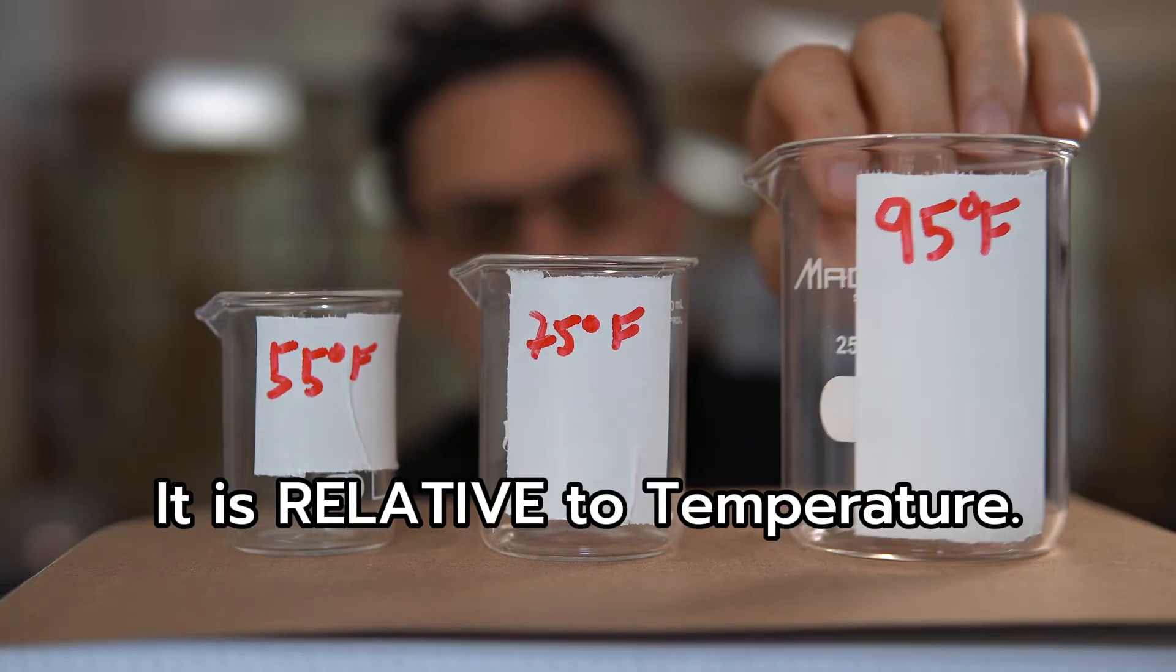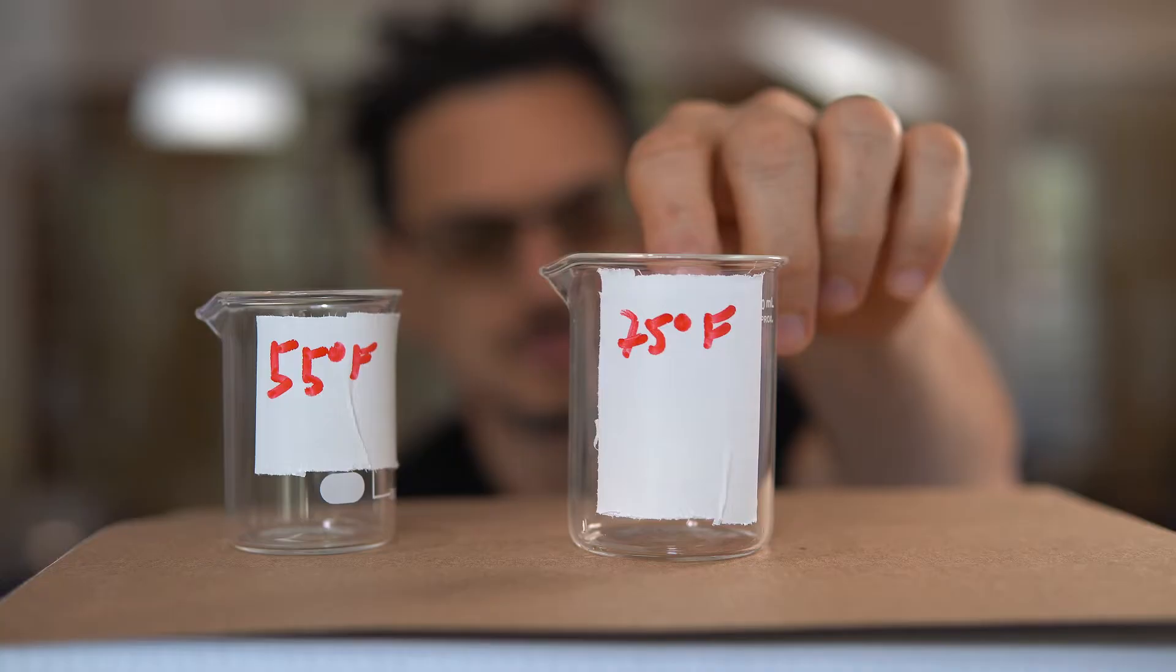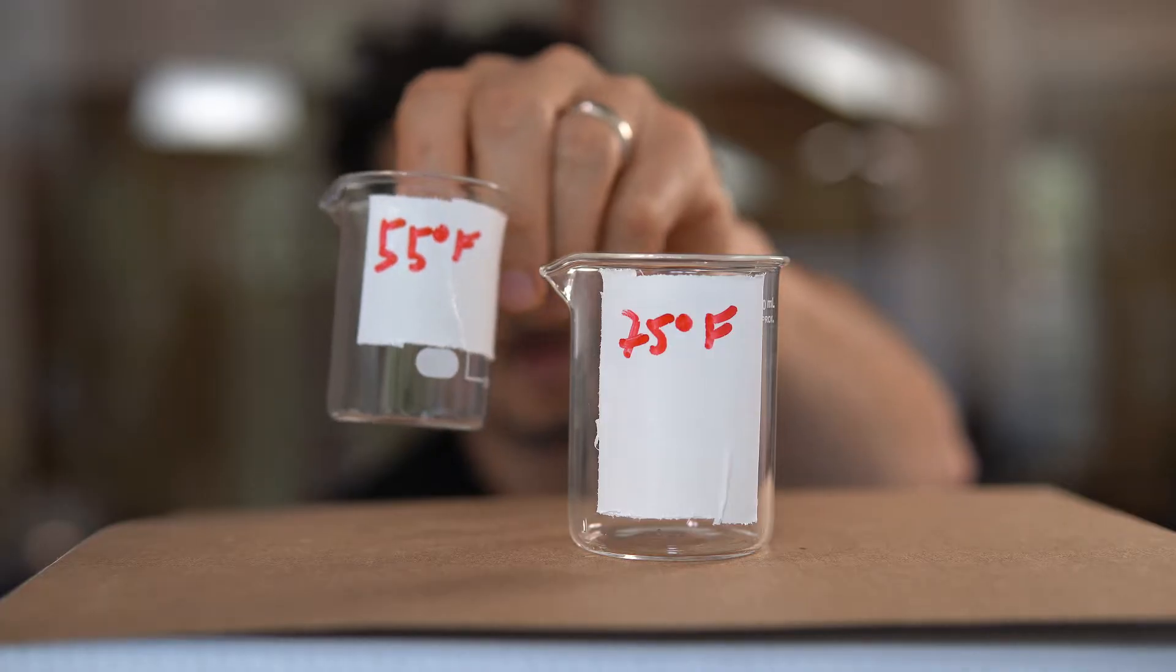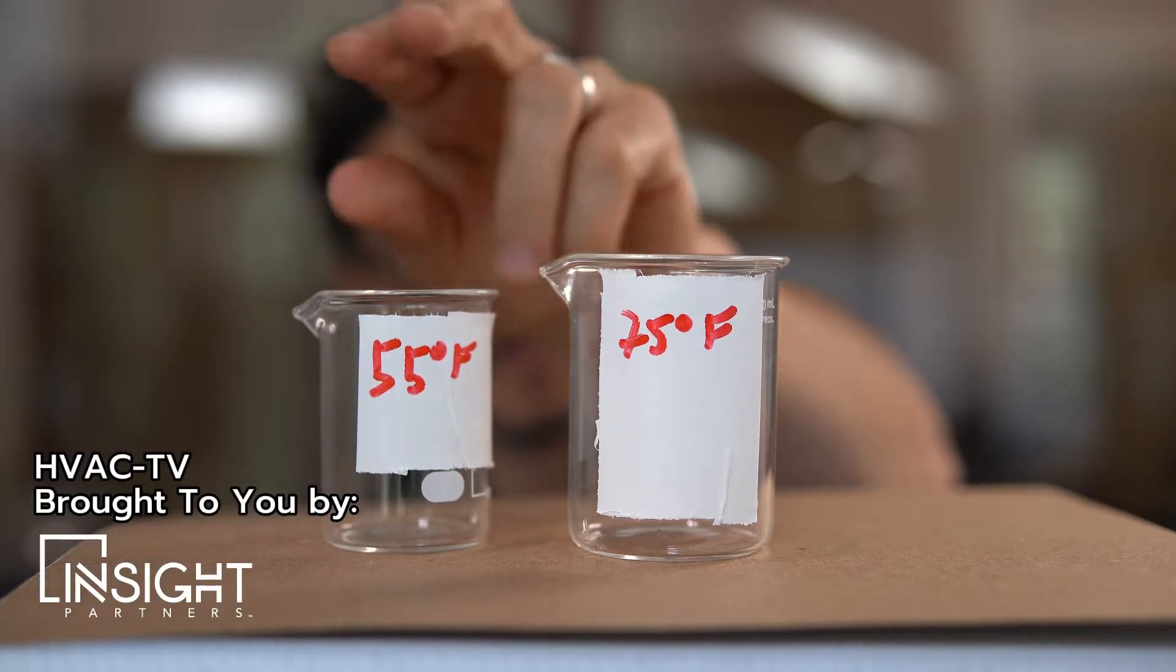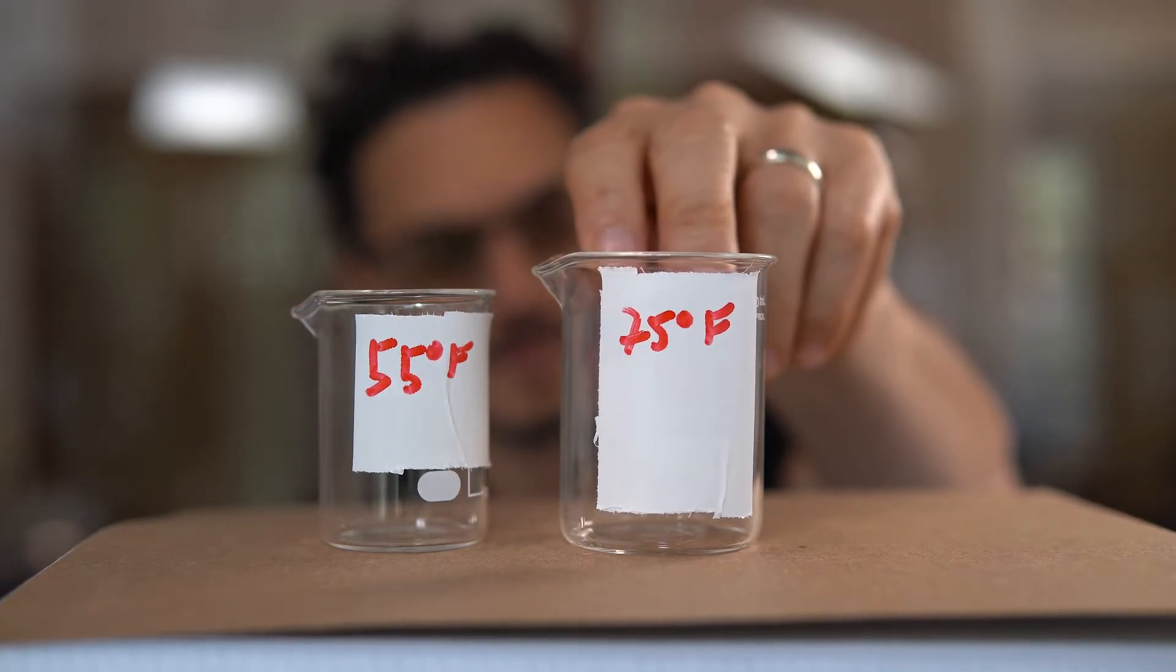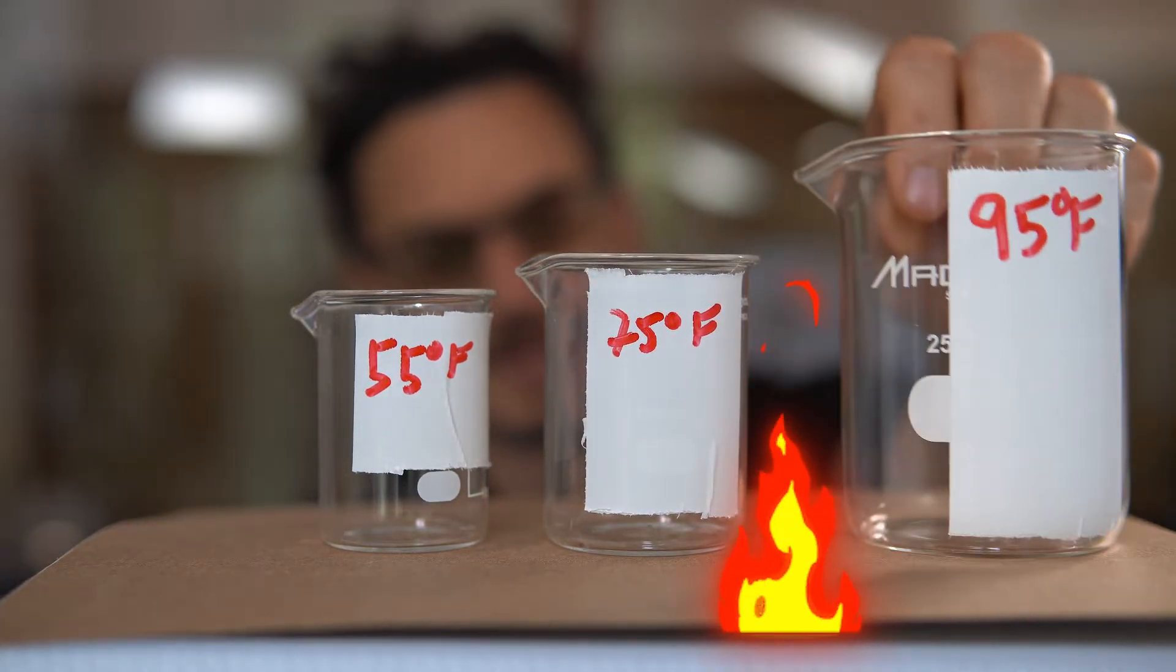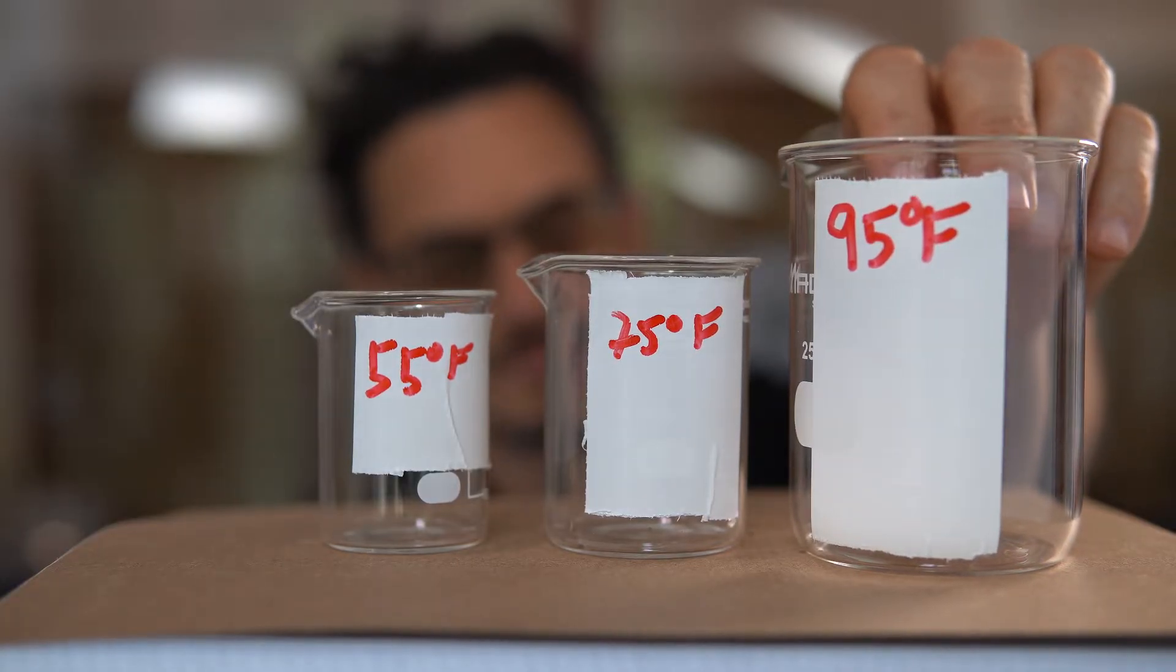I'm gonna use these three beakers here to demonstrate relative humidity in a visual sense. So let's say you had a volume of air at 55 degrees represented by this container right here. We'll call this container number one. Now, if you heated this up to 75 degrees, you would expect that the container or air volume got larger. And if you heated it up again to 95 degrees, you would imagine it got even larger.